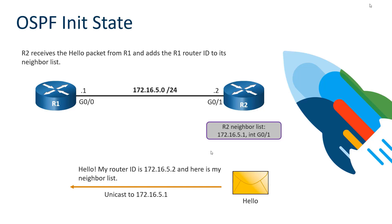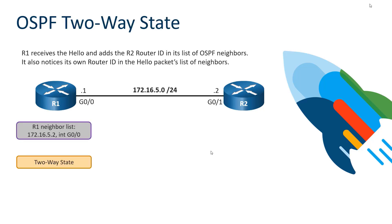R2 has added information into its message saying it has a new neighbor — R1, with IP address 172.16.5.1, off of its interface Gig0/1. When R2 sends its hello back as a unicast targeting our router R1's IP address of 172.16.5.1, R1 receives that hello. Since R1 sees itself in R2's neighbor list, we transition to the two-way state. R1 received a hello from R2, and that hello includes R2's neighbors, which also includes R1 — so we can transition to the two-way state.